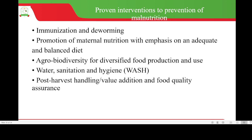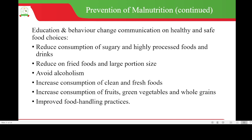Further interventions include agro-biodiversity for diversified food production and use, water, sanitation and hygiene (WASH), post-harvest handling, value addition and food quality assurance. Education and behavioral change communication on healthy and safe food choices includes reducing consumption of sugary and highly processed foods and drinks, reducing fried foods and large portion sizes, avoiding alcoholism, increasing consumption of clean and fresh foods, fruits, green vegetables and whole grains, and improving food handling practices.